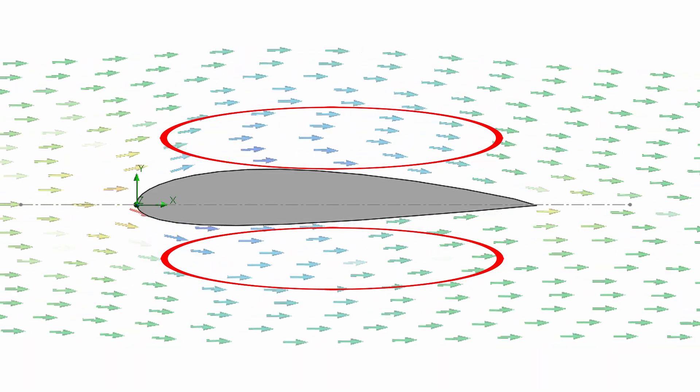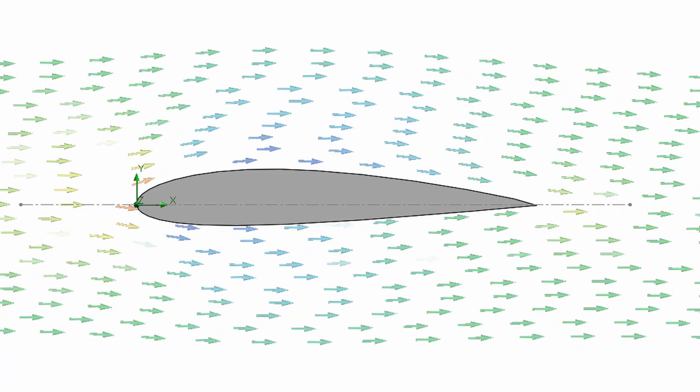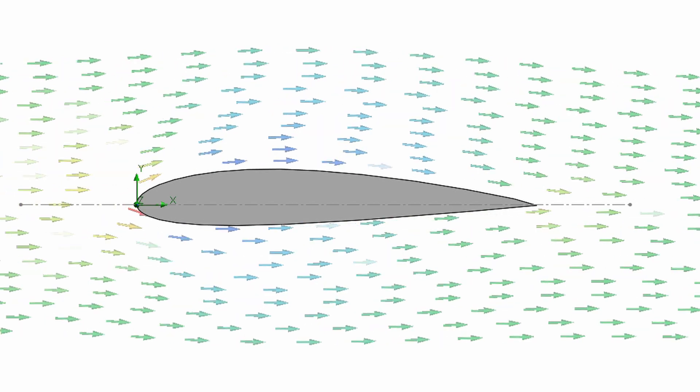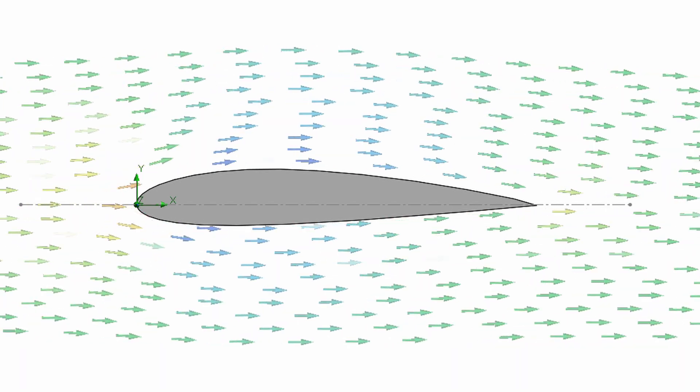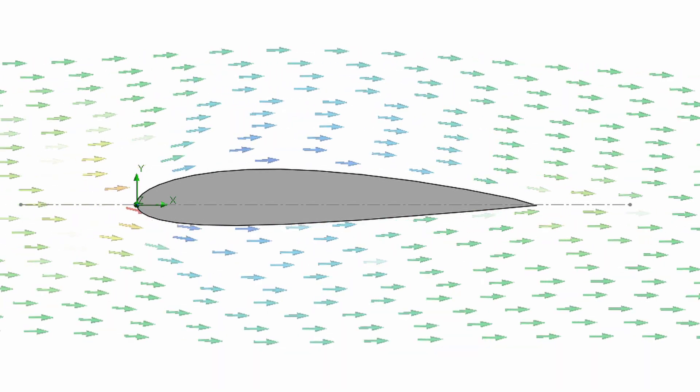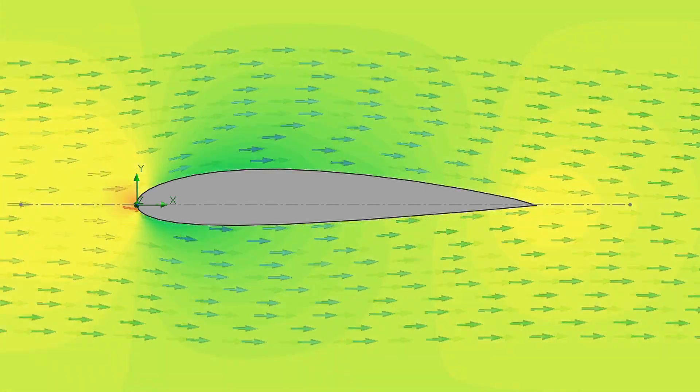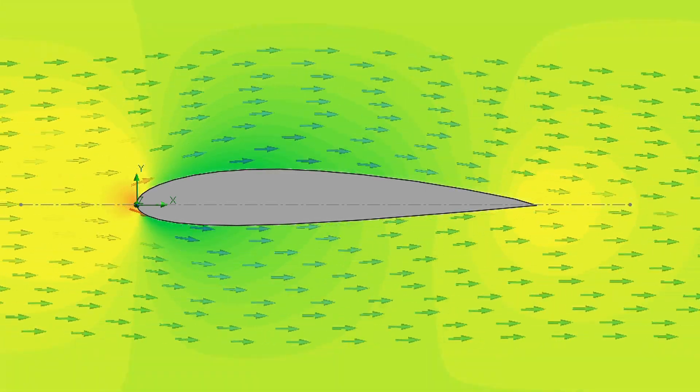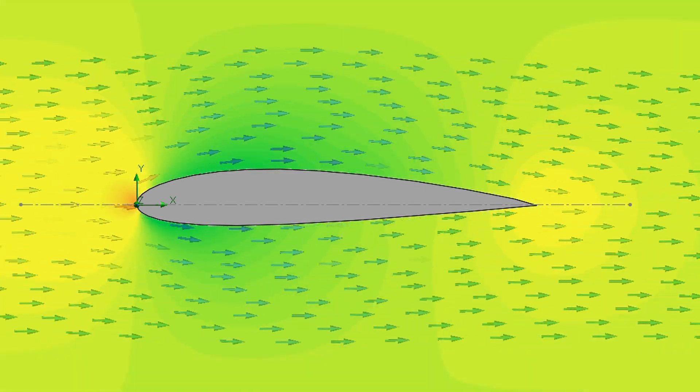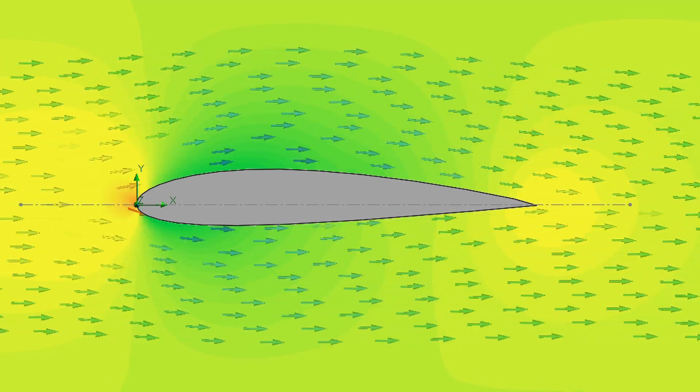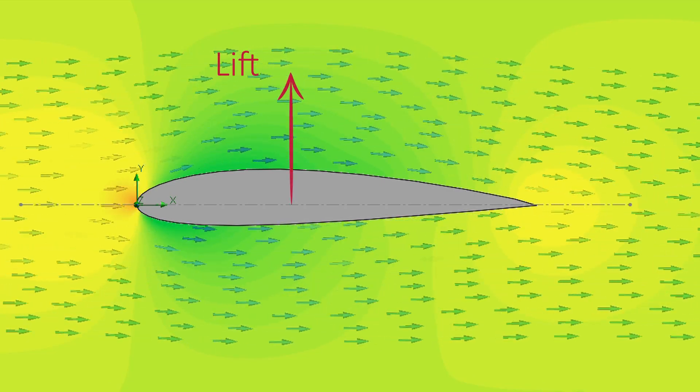So, if we represent the relative pressure, we obtain a distribution like this one. Note that the pressure above the airfoil is lower than the pressure below. For this reason there is a net vertical force, the lift.